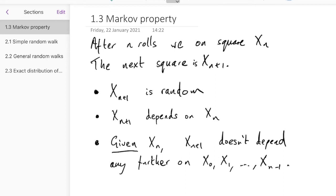So it's this third thing that is the Markov property. It matters where we are now, but it doesn't matter how we got here. The future depends on the present, but given the present, it doesn't depend any further on the past.